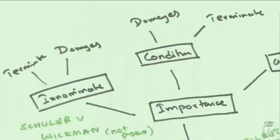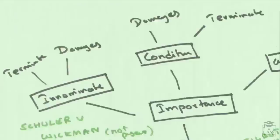Finally, you have a very sublime type of express term, which is the innominate term, where it affords the same remedies as conditions themselves, which is either termination or damages. Now, for a clear example of what an innominate term is, have a look at Schuller and Wickman, as well as Lombard and Butterworth. Now, in relation to the former, court held that there is no innominate term, and the latter, as in Lombard, court held that there was one, as in there was an innominate term present.